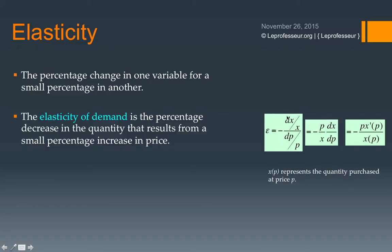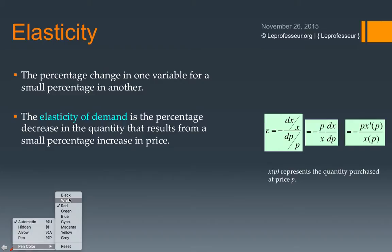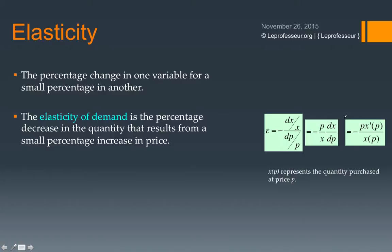So epsilon equals minus (dx/x) divided by (dP/P) — the percentage change in quantity divided by the percentage change in price. Rearranging, this becomes minus (P/x)(dx/dP), where dx/dP is the derivative of quantity x with respect to price P, since x is a function of P.